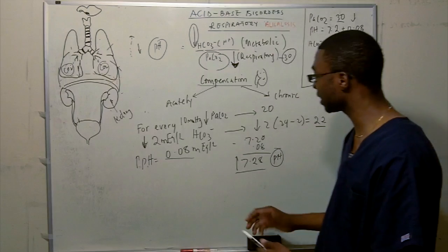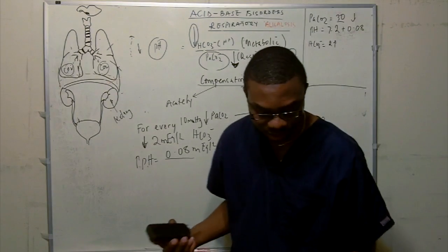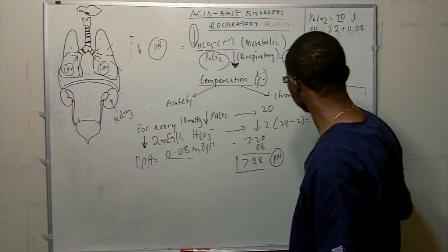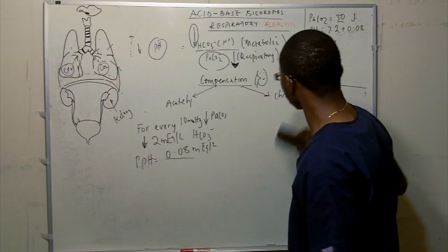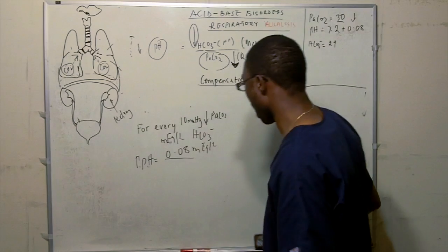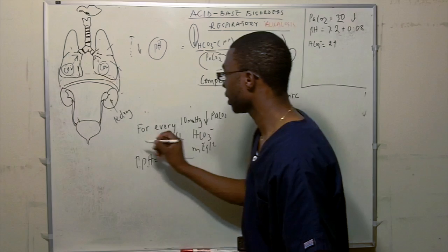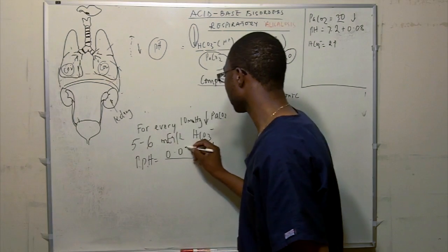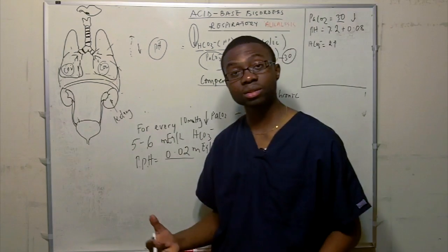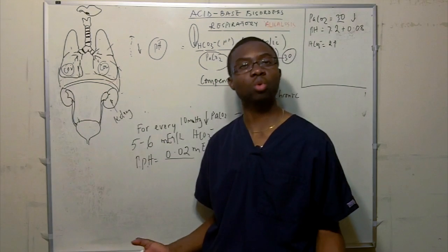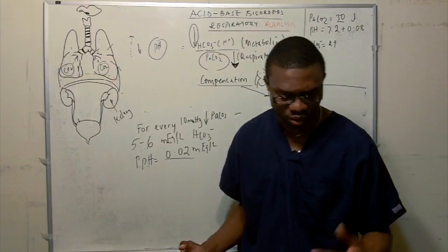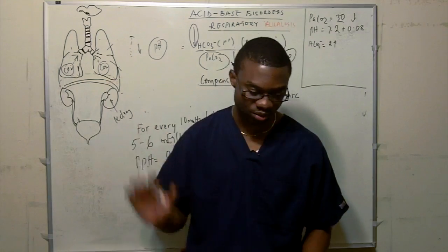Before the kidney is going to compensate, the PaCO2 was 30. You're already hyperventilating at this point. You're already blowing it out. The PaCO2 has already dropped. The only way, so let's say this is 30, the only way to fix it, and we know the pH is going to drop anyway. And the pH, let's say the pH is 7.2. Bicarb, which has to be. Remember, the kidney has to compensate. The bicarb was 24 at this point actually.